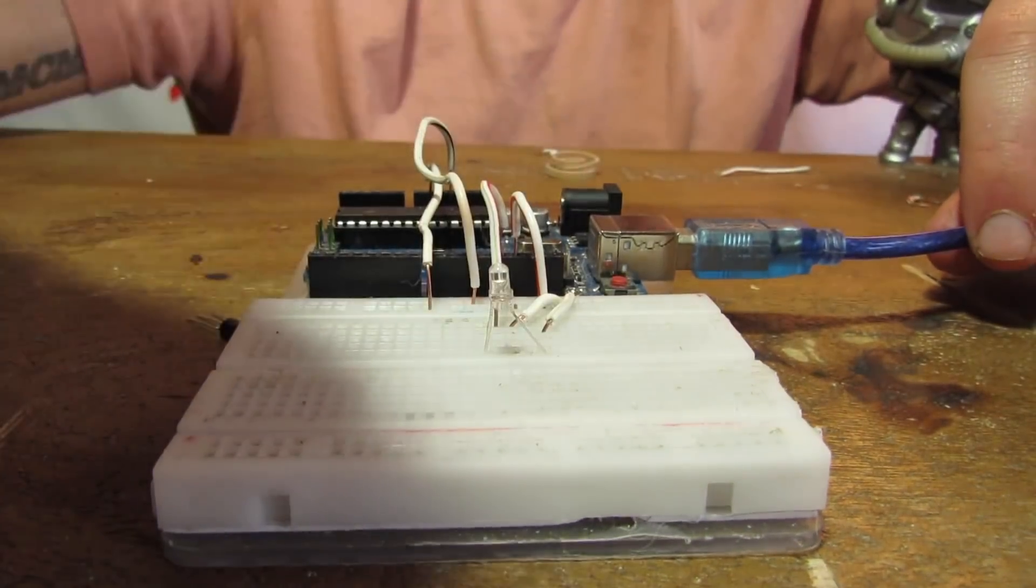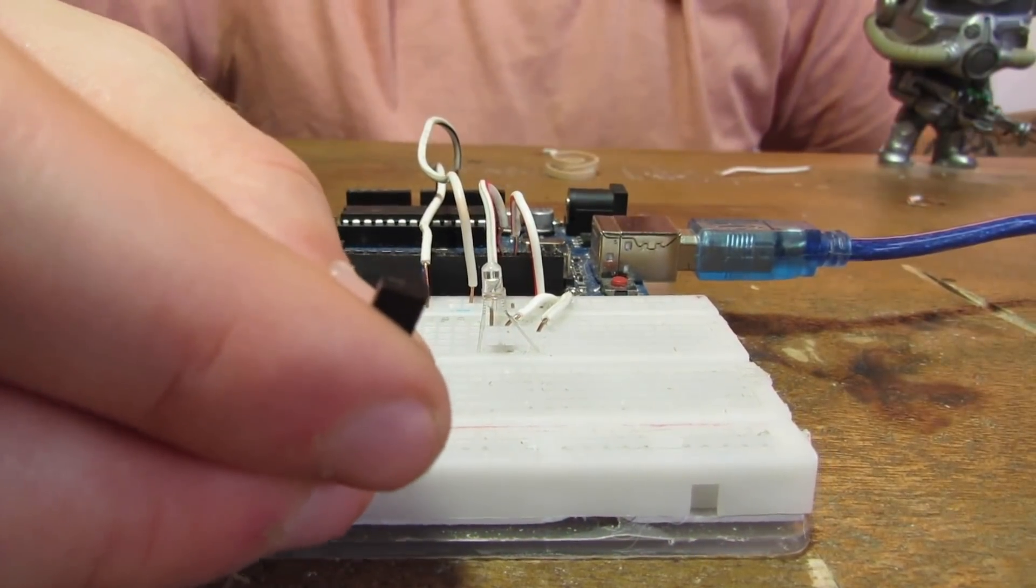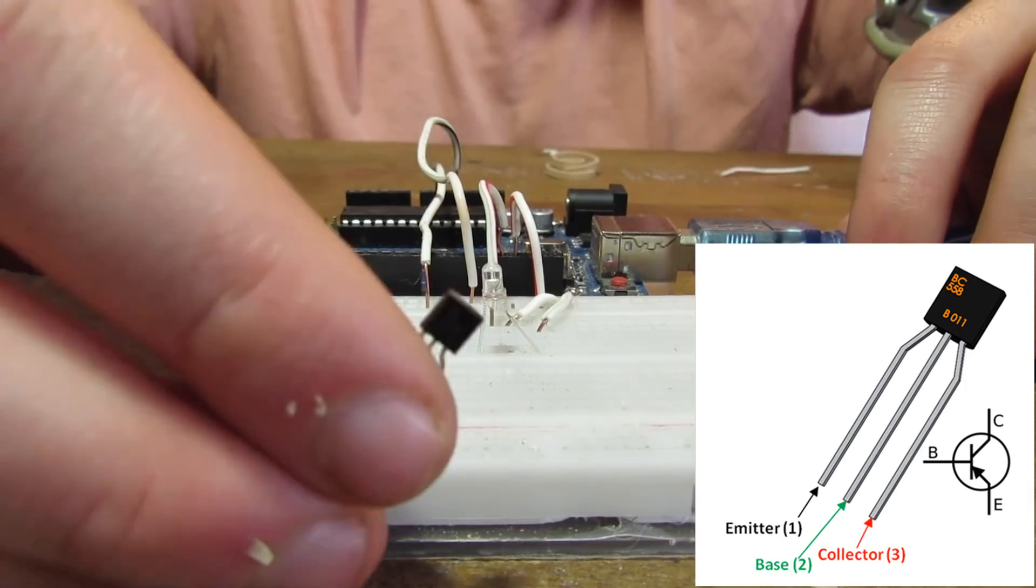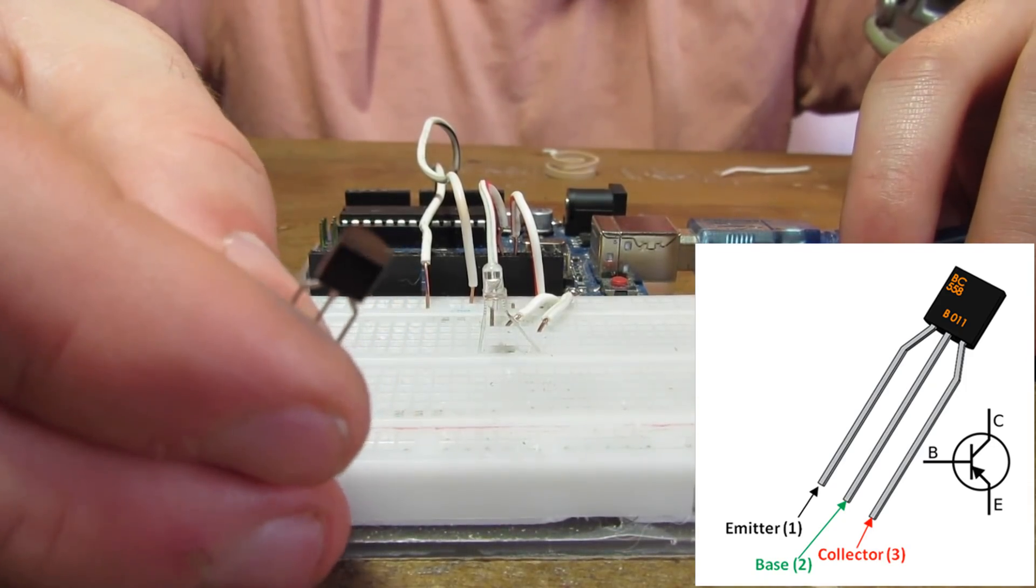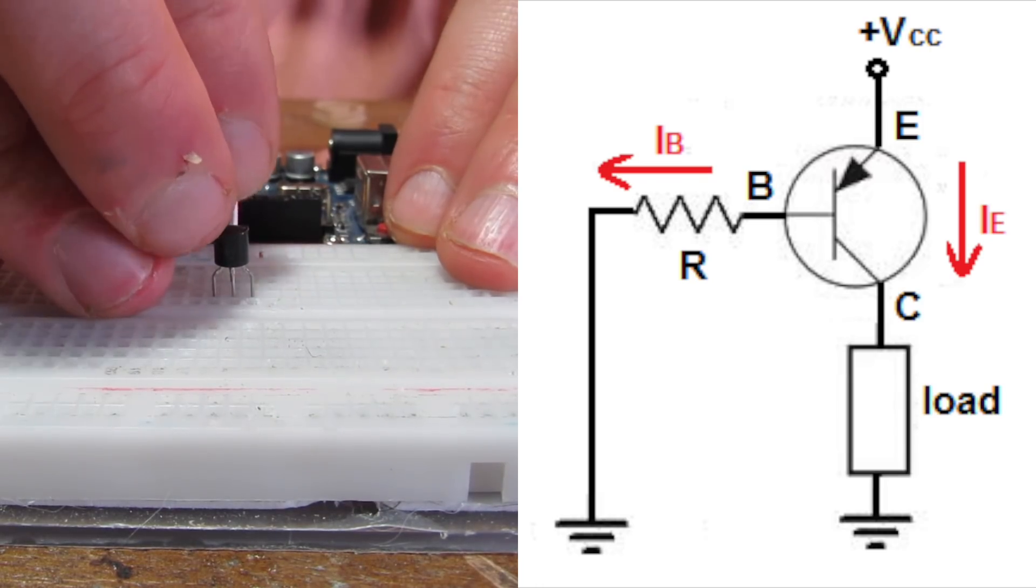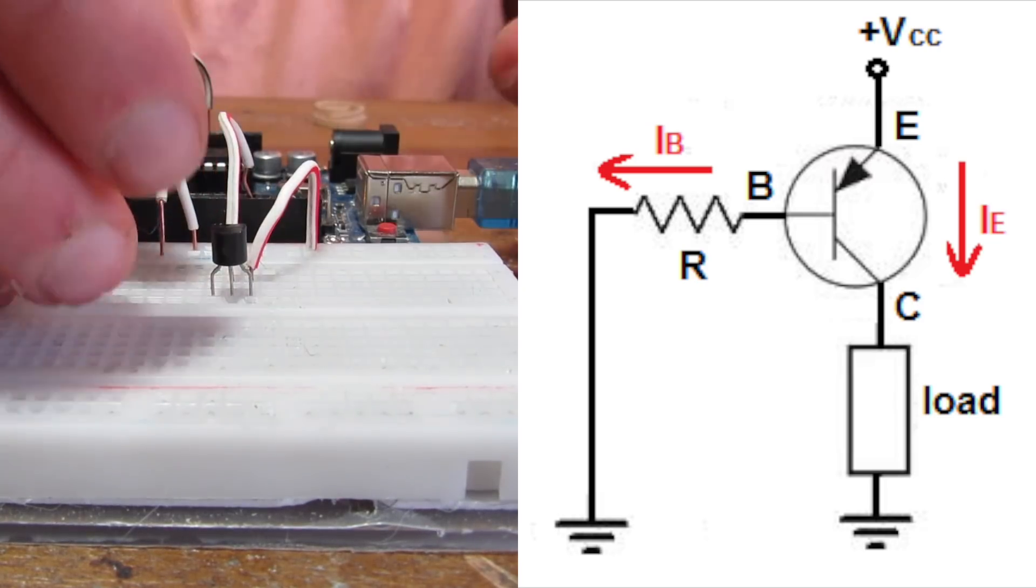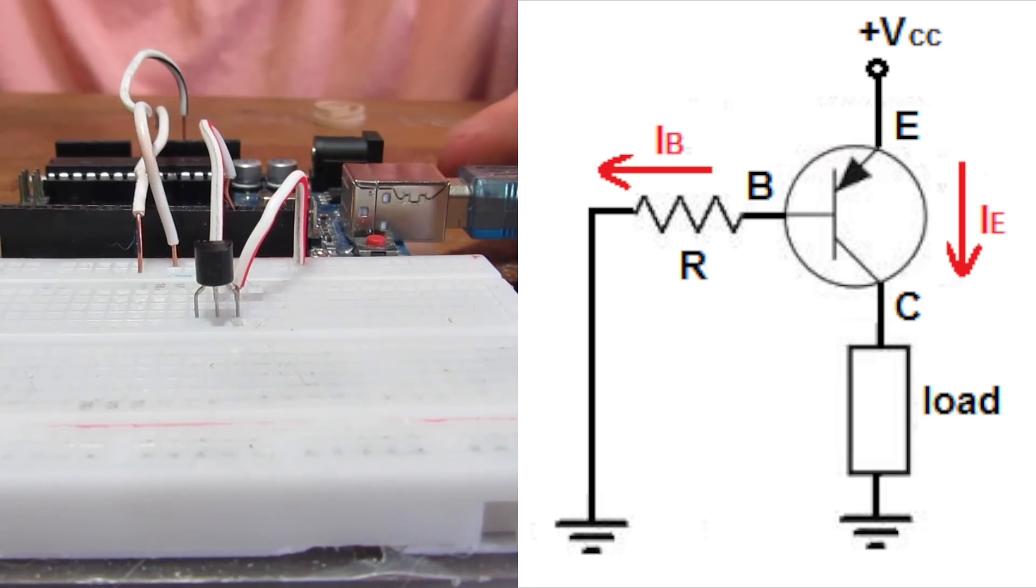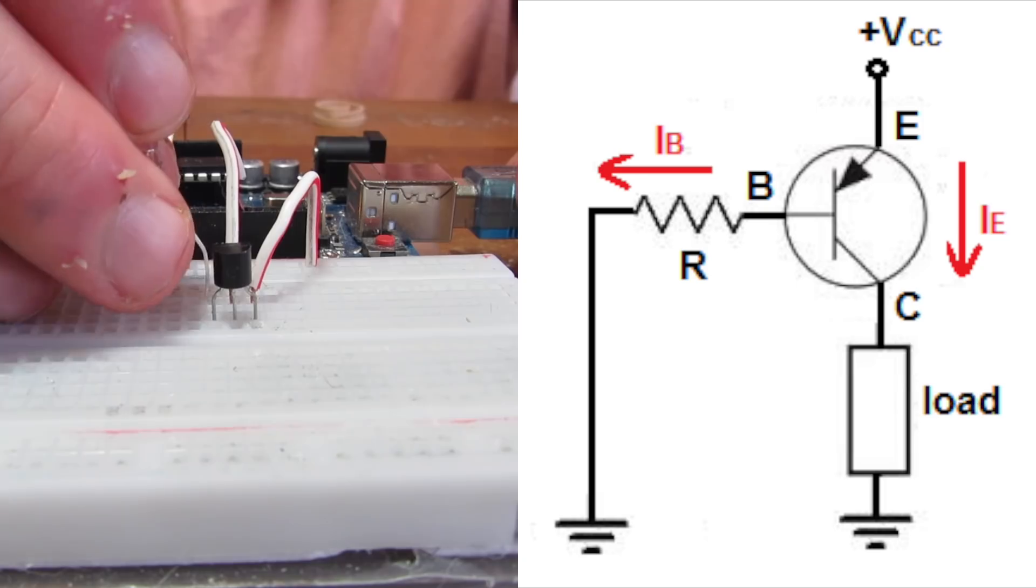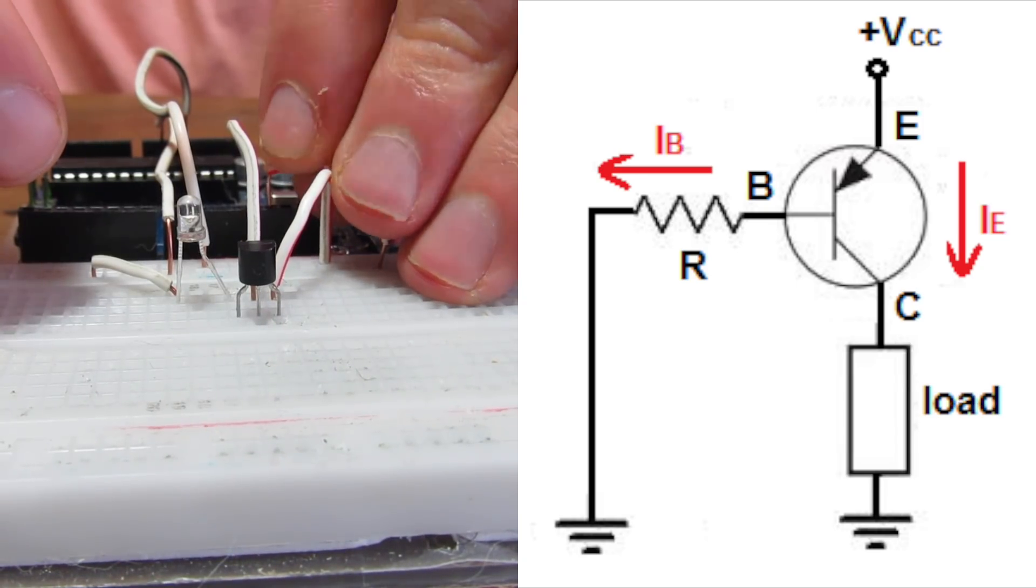So, that is a low-level NPN transistor. Now, on to PNP. PNPs are used to control the high side of a circuit, so they are connected up to positive. The base is still in the middle, which is going to pin 13. Emitter is going to be positive this time, and the positive LED is now going to go to the collector, right to ground. Hooking up the ground to the Arduino.